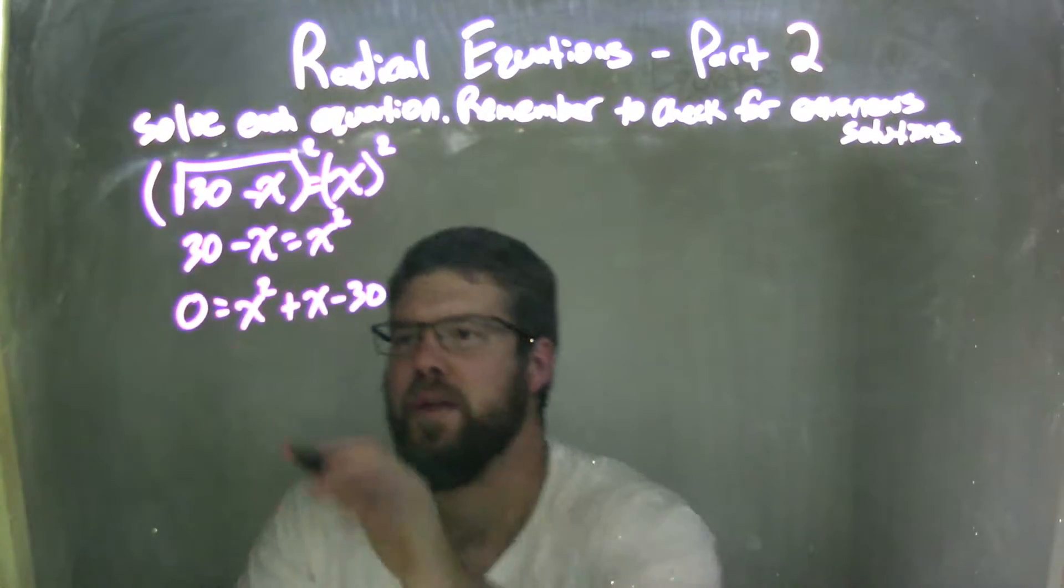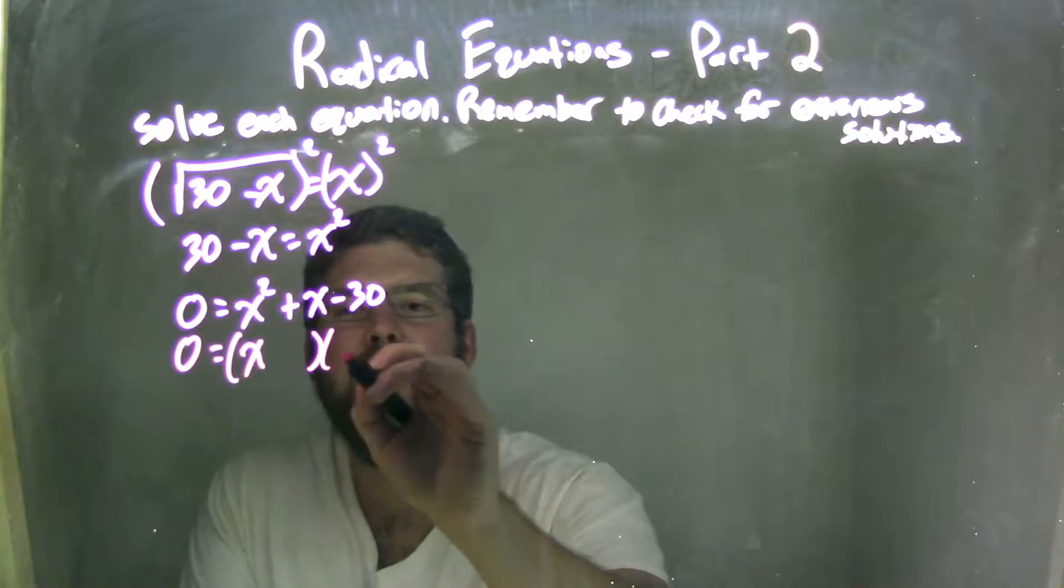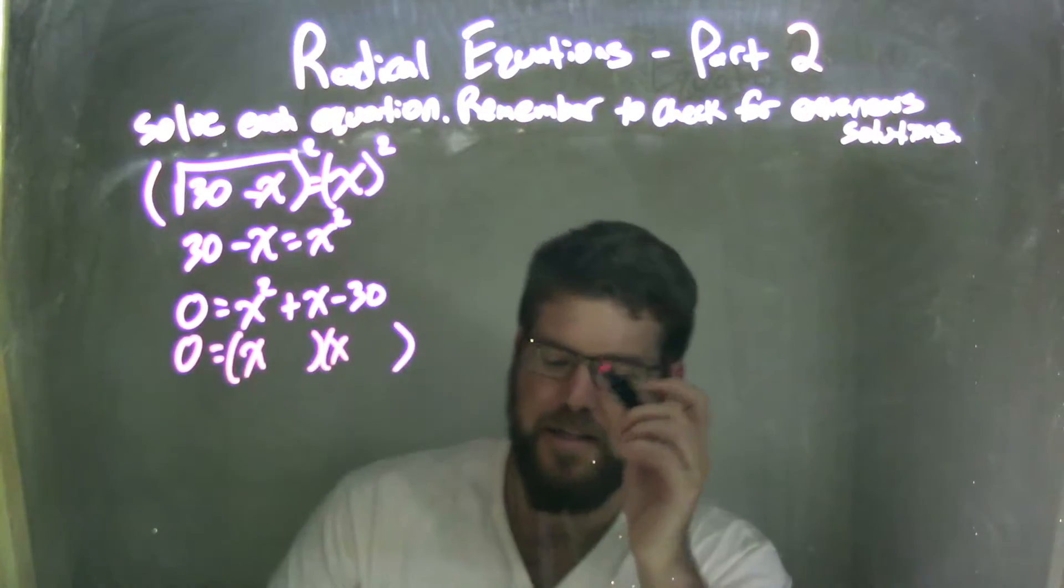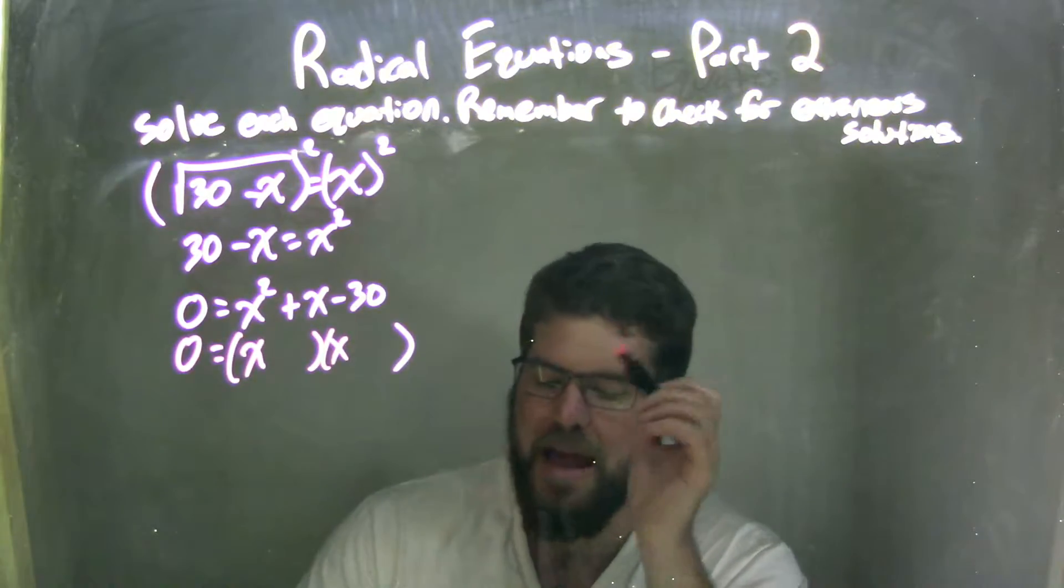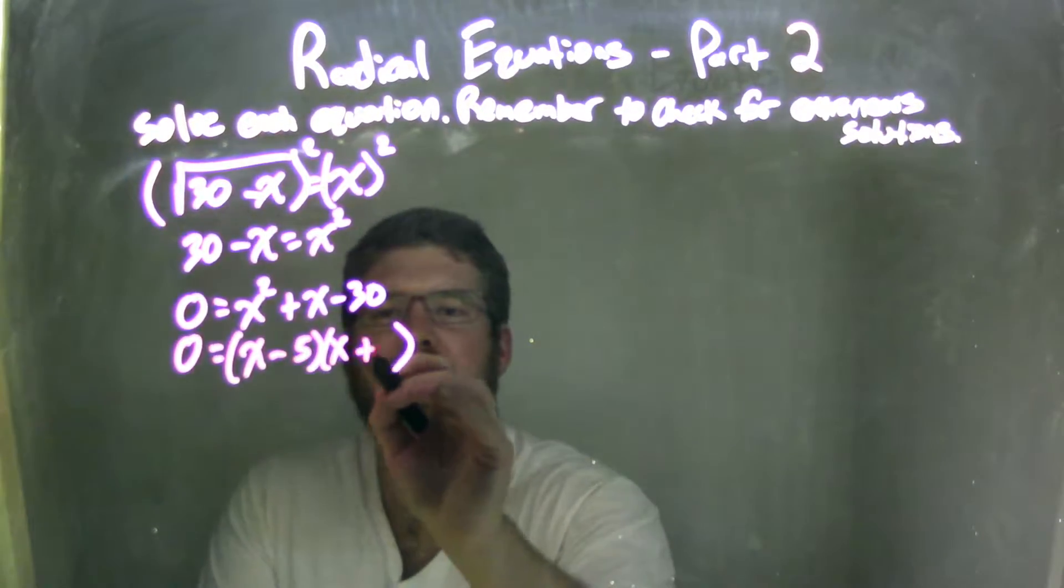Now we need to factor that. So I'm going to factor this, and I really need to think, well, what two numbers multiply to be negative 30 but add to be 1.